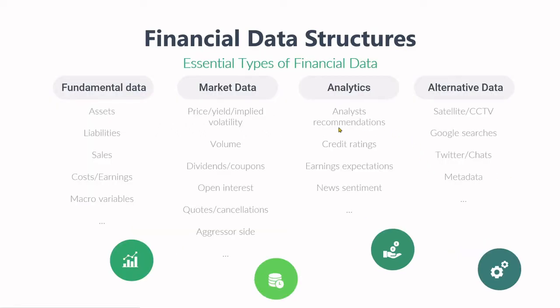There are essentially four types of financial data. The first one is fundamental data — examples include assets, sales, liabilities, costs, earnings, macro variables, etc. Then we have market data, such as volume, dividends, open interest, yields, volatilities, quotes, coupons, etc. Thirdly, we have analytics: analyst recommendations, credit ratings, earnings expectations, news sentiments. And last but not least, alternative data, such as satellites, CCTV, video, Google searches, Twitter, chats, and metadata.